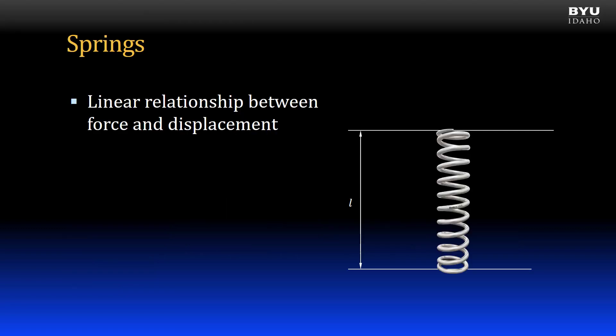Let's begin with springs. We will assume that the springs we analyze in this course all have a linear relationship between the force applied to the spring and the length that the spring displaces, or in other words, elongates or compresses. Here is the linear spring equation. It equates the applied force F to the displacement delta. The spring constant K represents the spring stiffness.